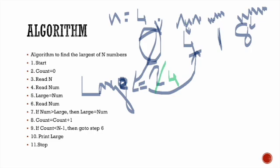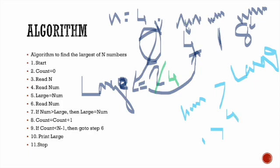Now the number is 4. Let's check the value. Is our current value greater than large? The value is 1. Is 1 greater than 4? No. So no change is made to the large variable.